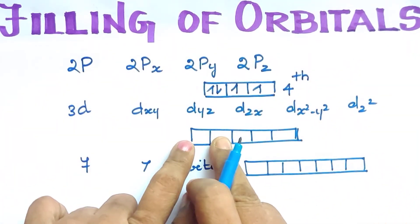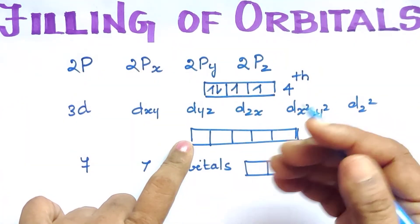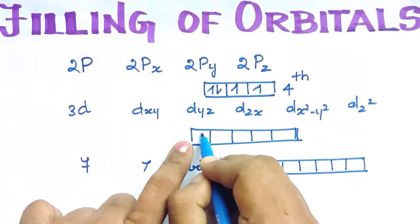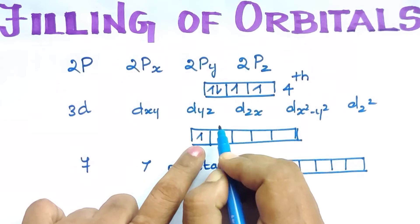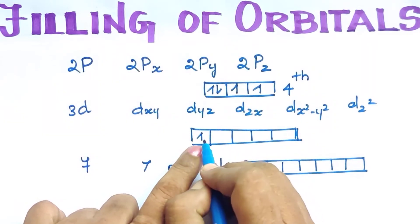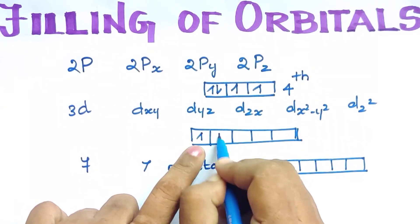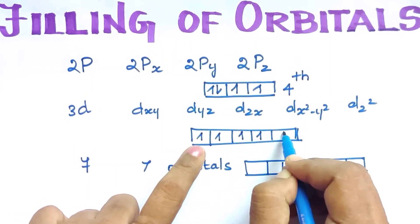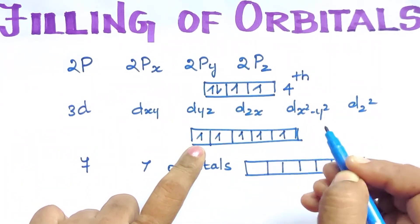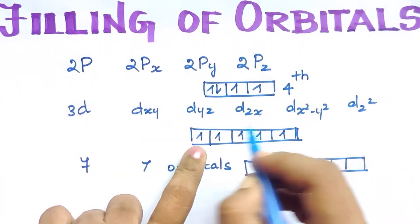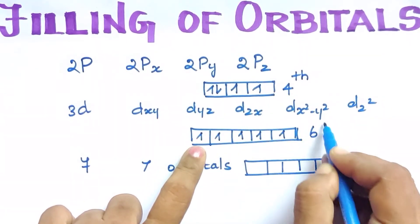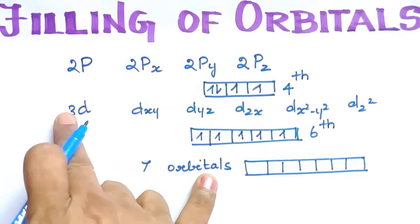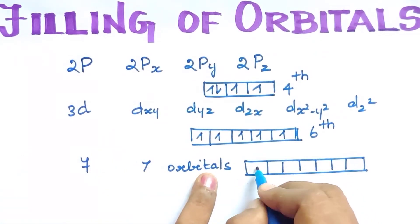For D orbitals, there are 5 boxes. Electrons fill one per box: 1, 2, 3, 4, 5 electrons each go into separate boxes. So pairing takes place only at the 6th electron in the case of D orbitals.